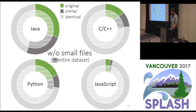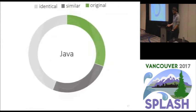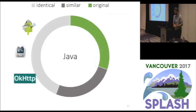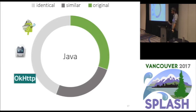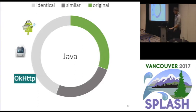Looking at languages one by one: in Java, we found that most identical files, as was true for all other languages, are dominated by popular frameworks. In Java, these were ActionBar Sherlock, Cordova, and OKHttp.